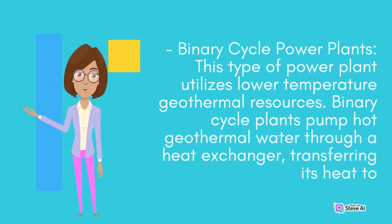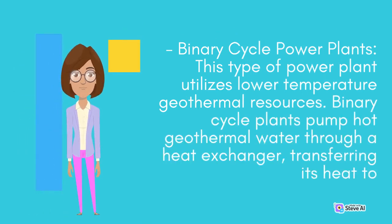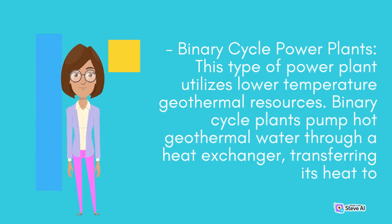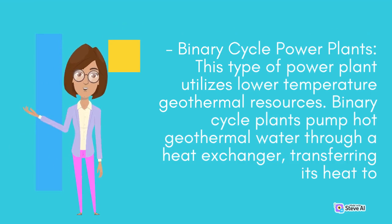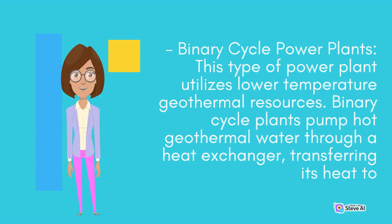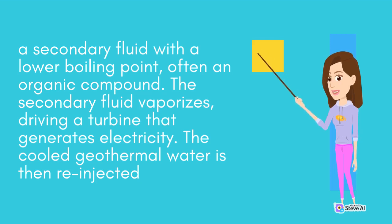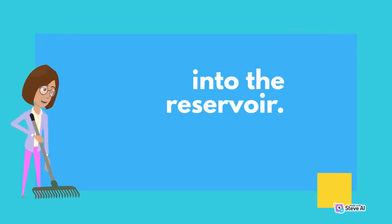Binary cycle power plants utilize lower-temperature geothermal resources. These plants pump hot geothermal water through a heat exchanger, transferring its heat to a secondary fluid with a lower boiling point, often an organic compound. The secondary fluid vaporizes, driving a turbine that generates electricity. The cooled geothermal water is then re-injected into the reservoir.